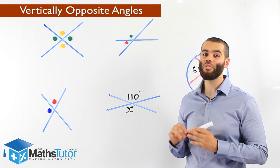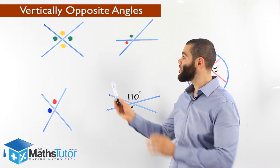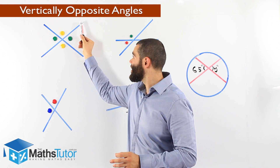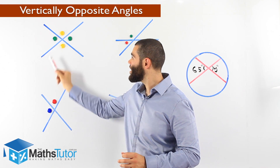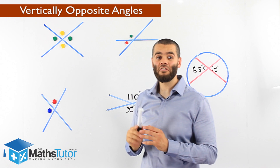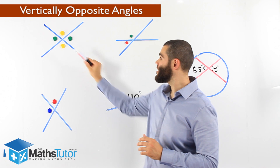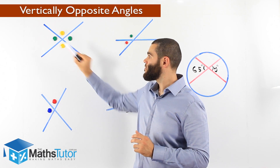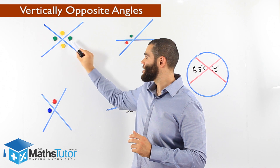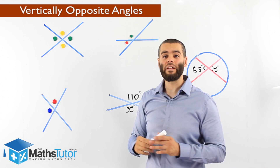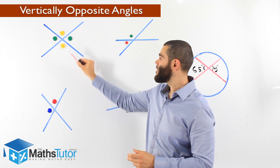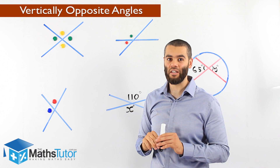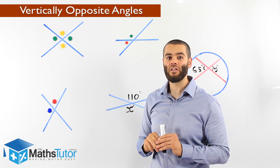Let's go through and see how they work. We have a straight line here and a straight line there. They cross and, as you can see, there are angles here and angles there. The ones marked in green are vertically opposite, and the ones marked in yellow are also vertically opposite.